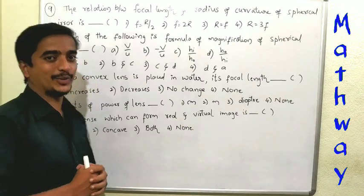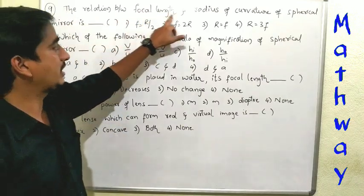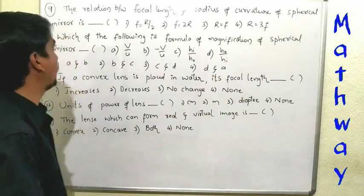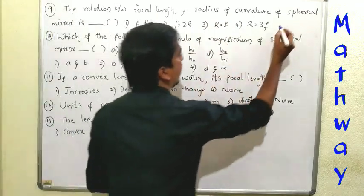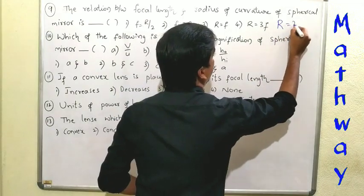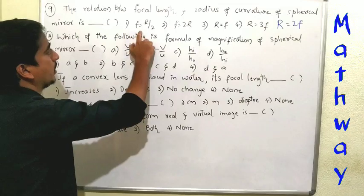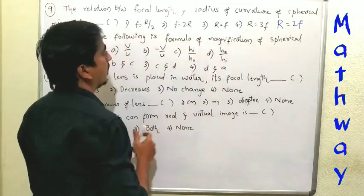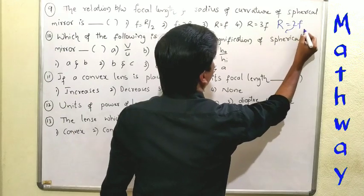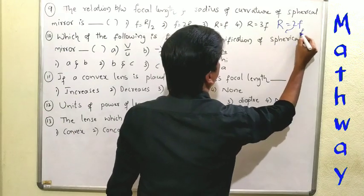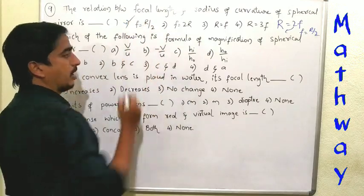Ninth question: the relation between focal length and radius of curvature of spherical mirrors is very important. The relation is R equal to 2F. So radius is two times of focal length. Therefore F equal to R by 2. Option one: R by 2.